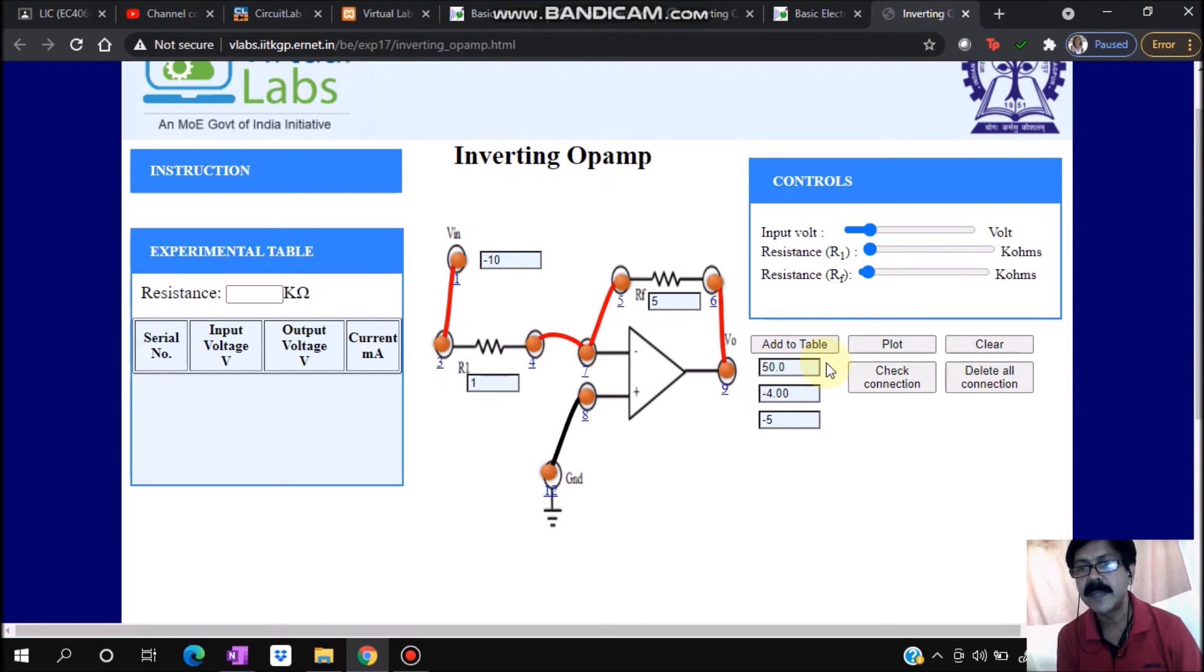What I got: serial number 1, minus 10 millivolts input. As the gain is 5, I'm getting 50 millivolts output. Similarly, I'll select the next input as minus 8. Again, what voltage am I getting? 40 millivolts output. This has been inserted into the table.